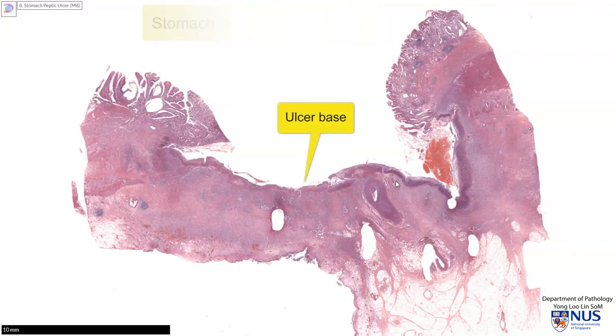In the center, you will see that there is a crater where there is a defect in the gastric mucosa, and this is the region of the ulcer.